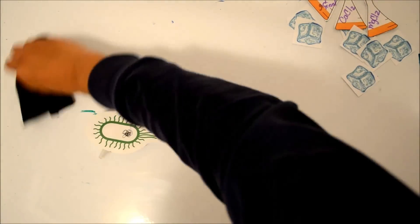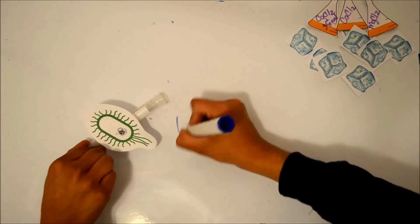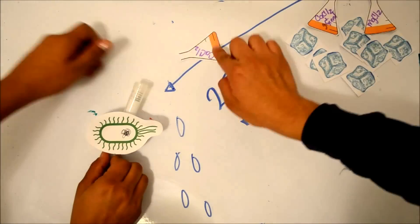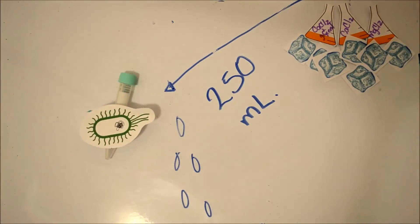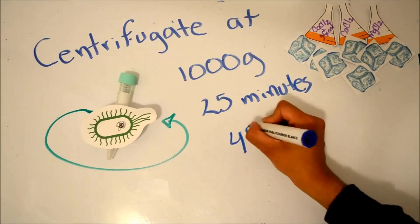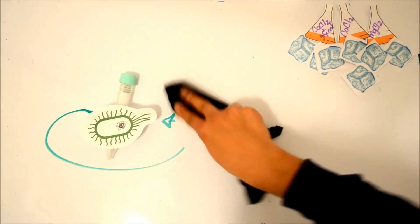Resuspend gently in 250 ml of calcium chloride solution. Incubate on ice for 20 minutes. Centrifuge at 1000 g at 4 degrees for 25 minutes.